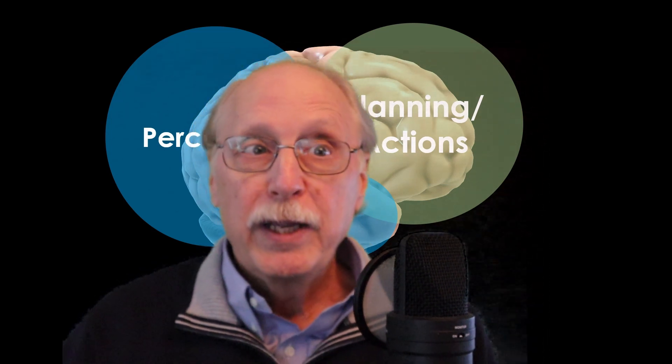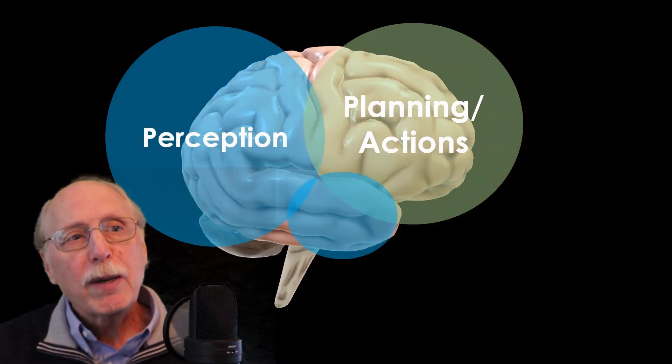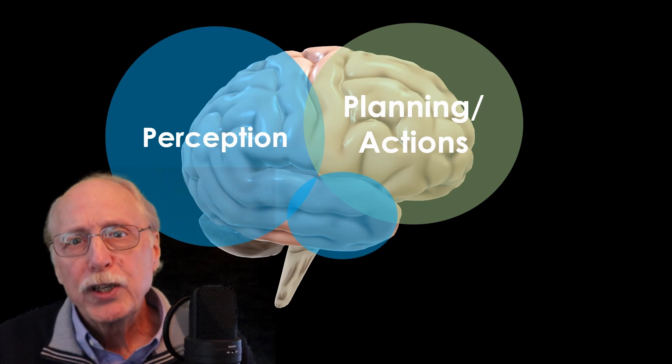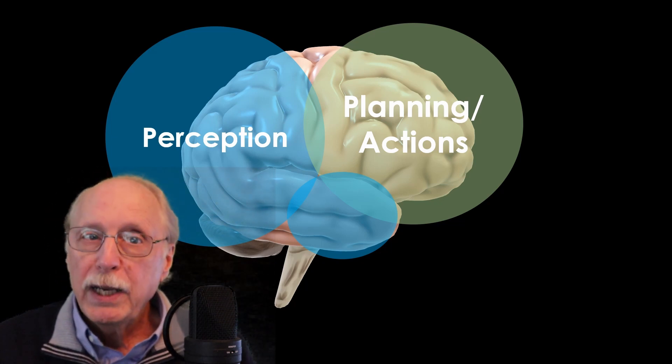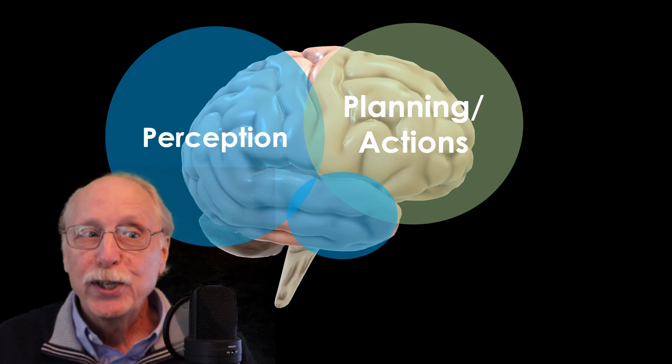In terms of area in the brain's neocortex, perception represents about half of the general intelligence problem, the other half being planning and acting on what you perceive.